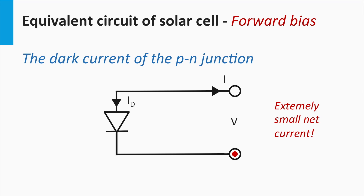Under forward bias in the dark, the P-N junction generates a significant current in the forward direction of the diode. Since current direction is defined by the flow of positive charge, the electrons responsible for the current flow in the block direction of the diode. Note that the current under forward bias is opposite and much higher than under reverse bias.